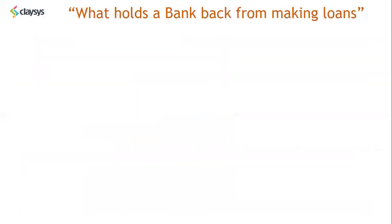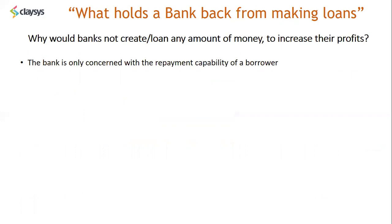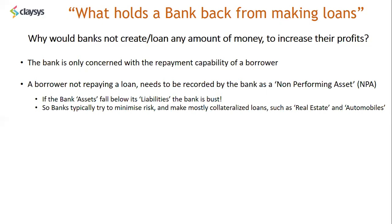So what is holding a bank back from making loans? Why would banks not just create any amount of money to increase their profits? The bank is only concerned with the repayment capability of a borrower. A borrower not repaying a loan needs to be recorded as a non-performing asset or NPA. If the bank's assets fall below its liabilities, the bank is bust — it goes bankrupt. Banks typically try to minimize risk and make mostly collateralized loans, such as real estate loans or automobile loans.